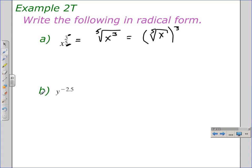To write y to the negative 2 and 5 tenths power in radical form, first we're going to want to convert this decimal number into an improper fraction. It's going to be negative. And since that is 2 and 1 half, that would give us negative 5 halves power.